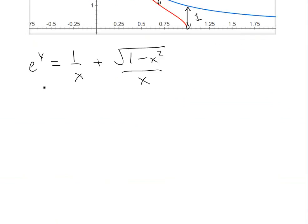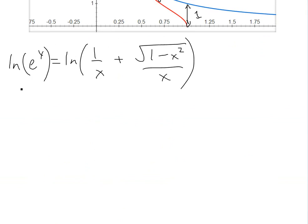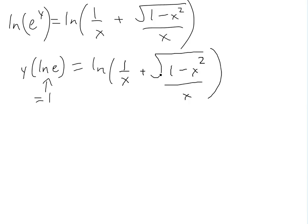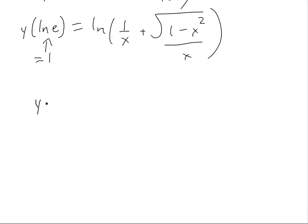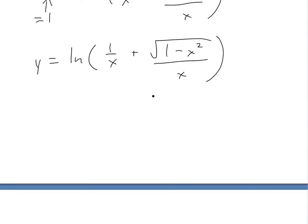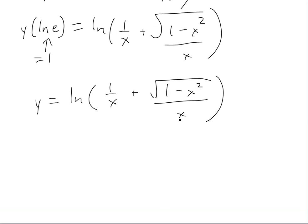Now we take the natural log of both sides. Using log properties, the y in the exponent comes down, giving y times ln(e), and ln(e) equals 1. So y equals ln of 1 divided by x plus square root of 1 minus x², all divided by x, with domain 0 < x ≤ 1.